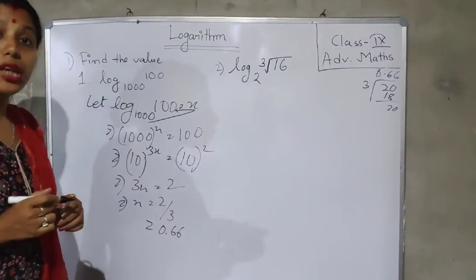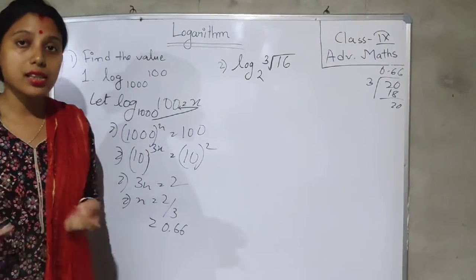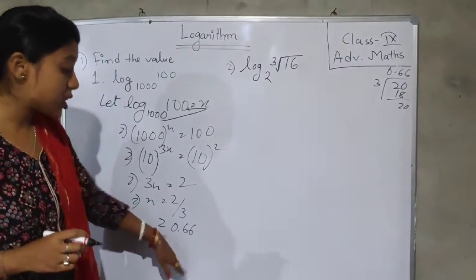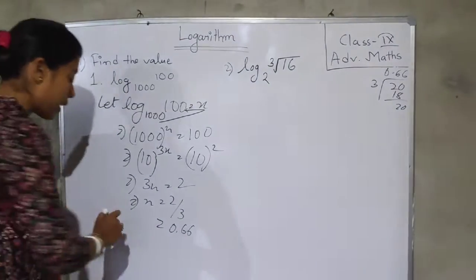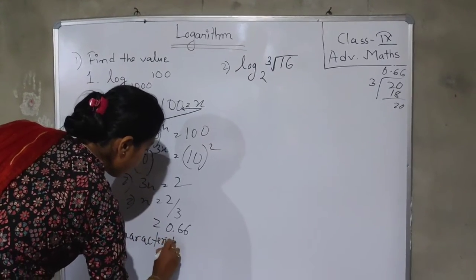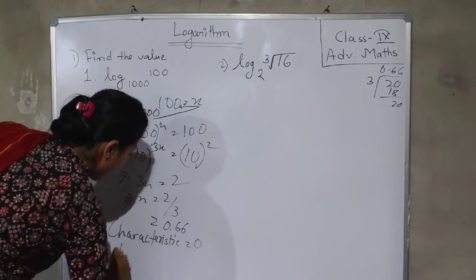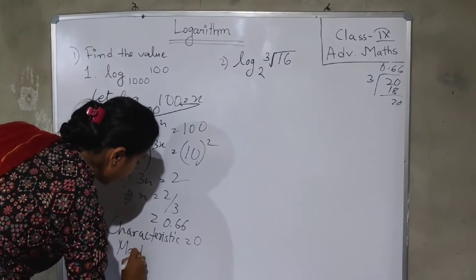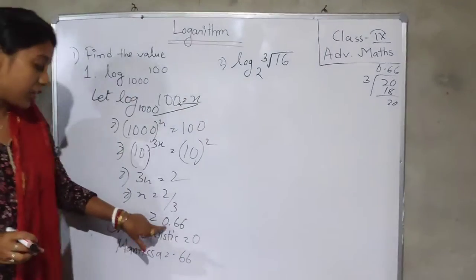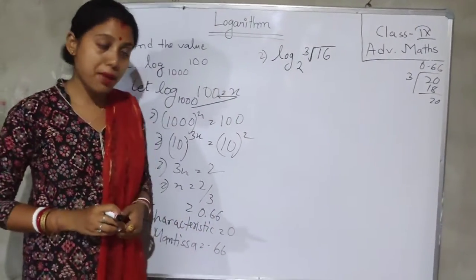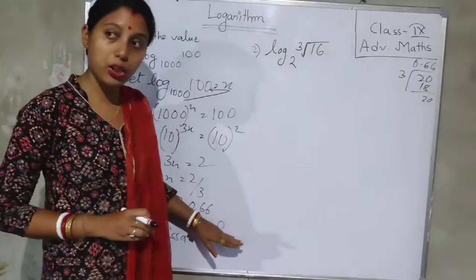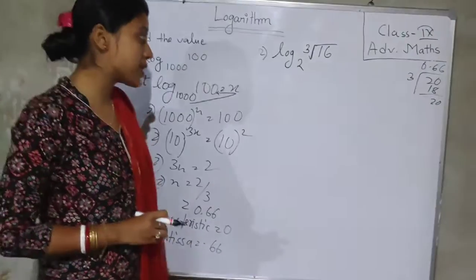We have also learned about characteristics and mantissa. From this answer of 0.66, the characteristic is the integral part, which is 0, and the mantissa is the decimal part, which is 0.66. So characteristic equals 0 and mantissa equals 0.66.